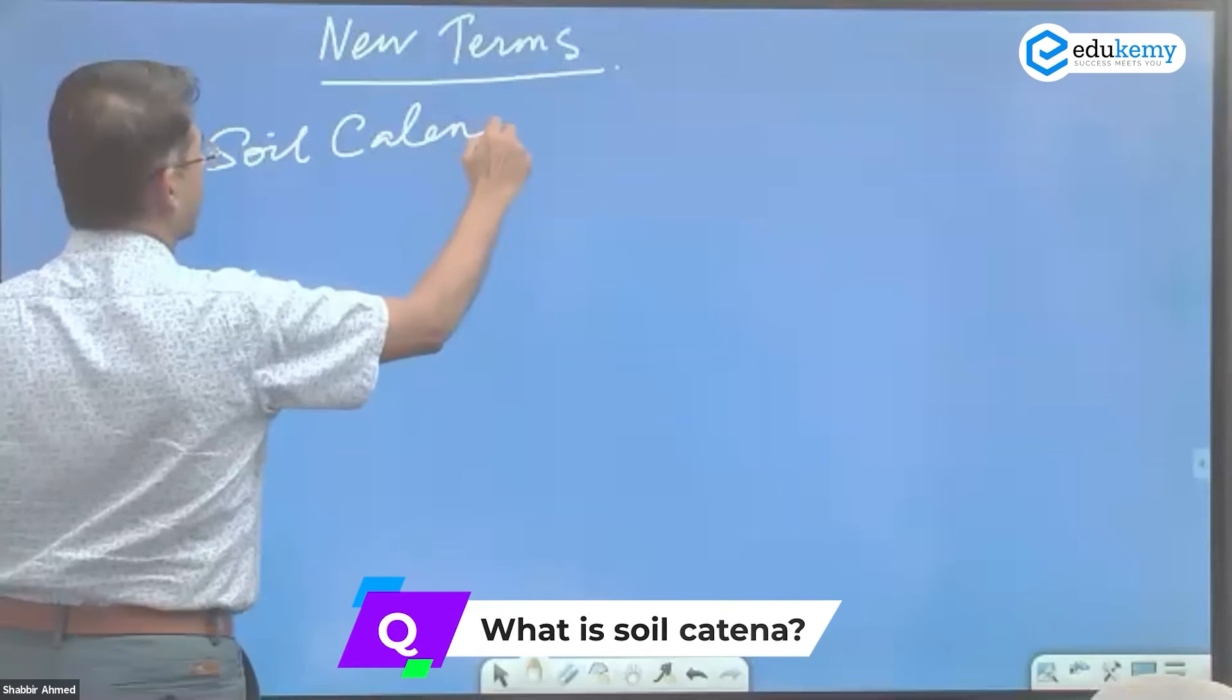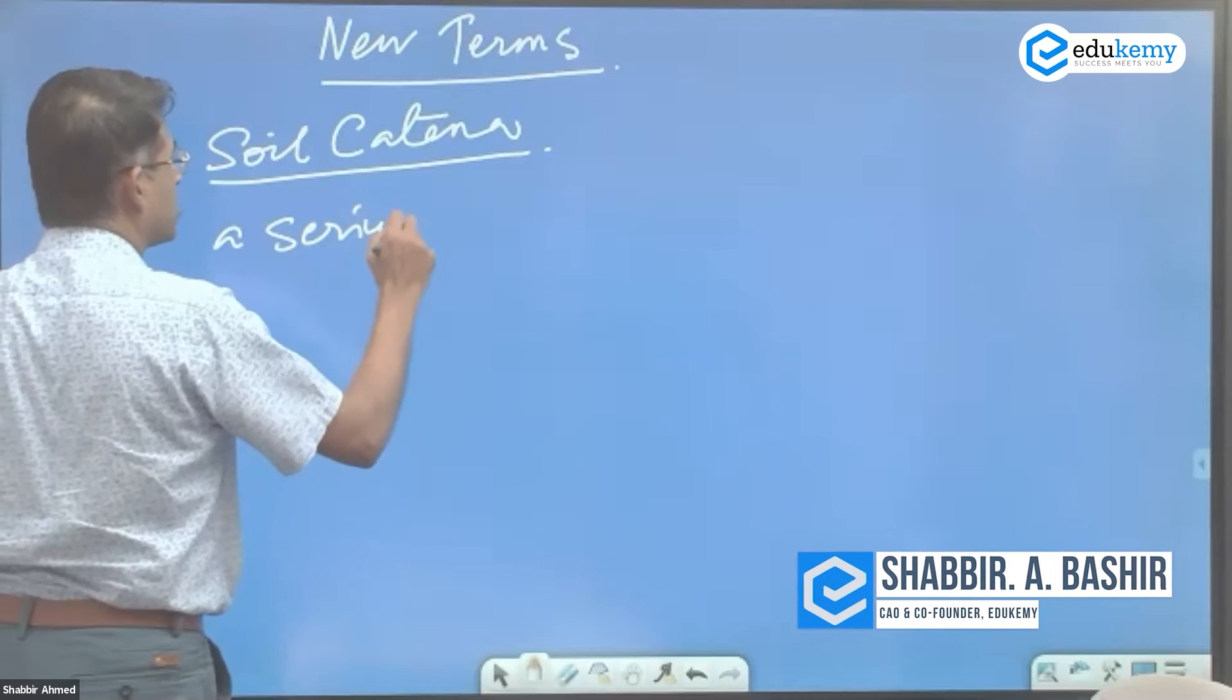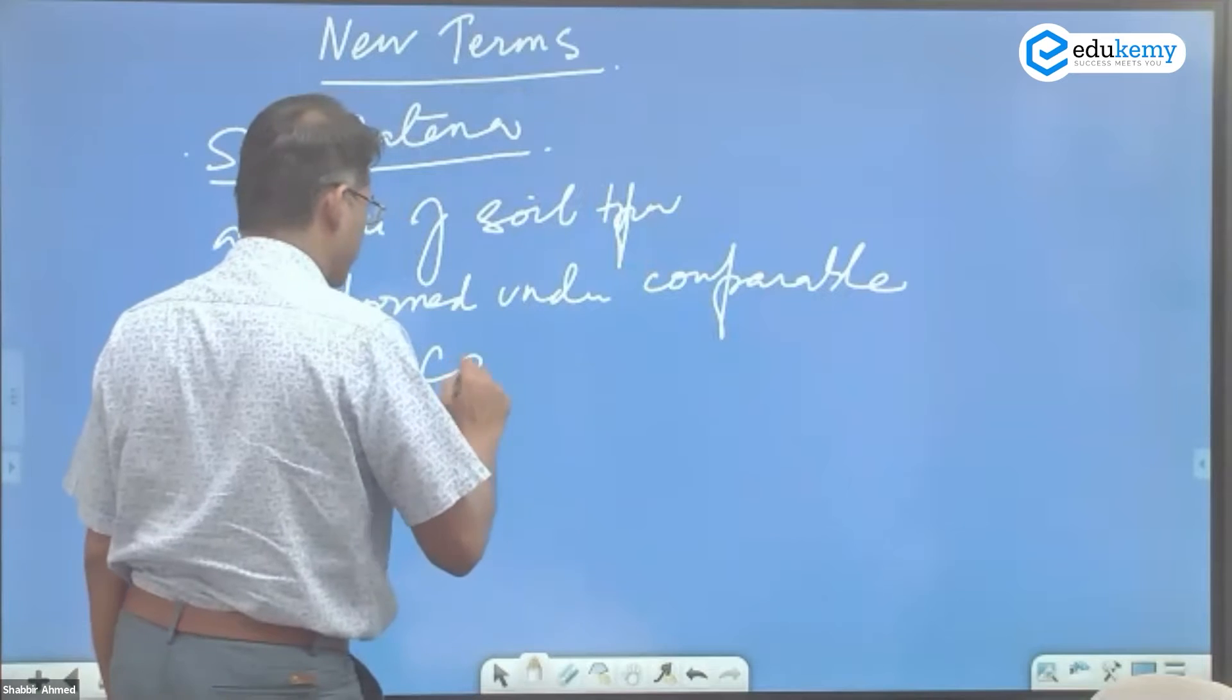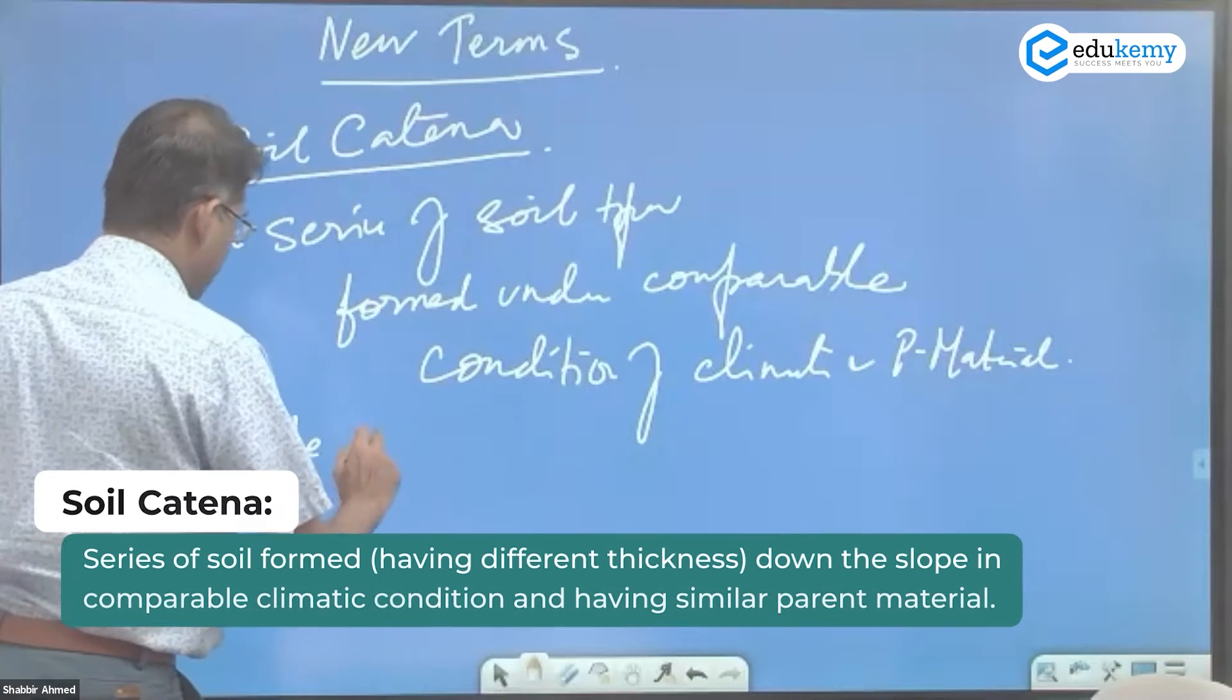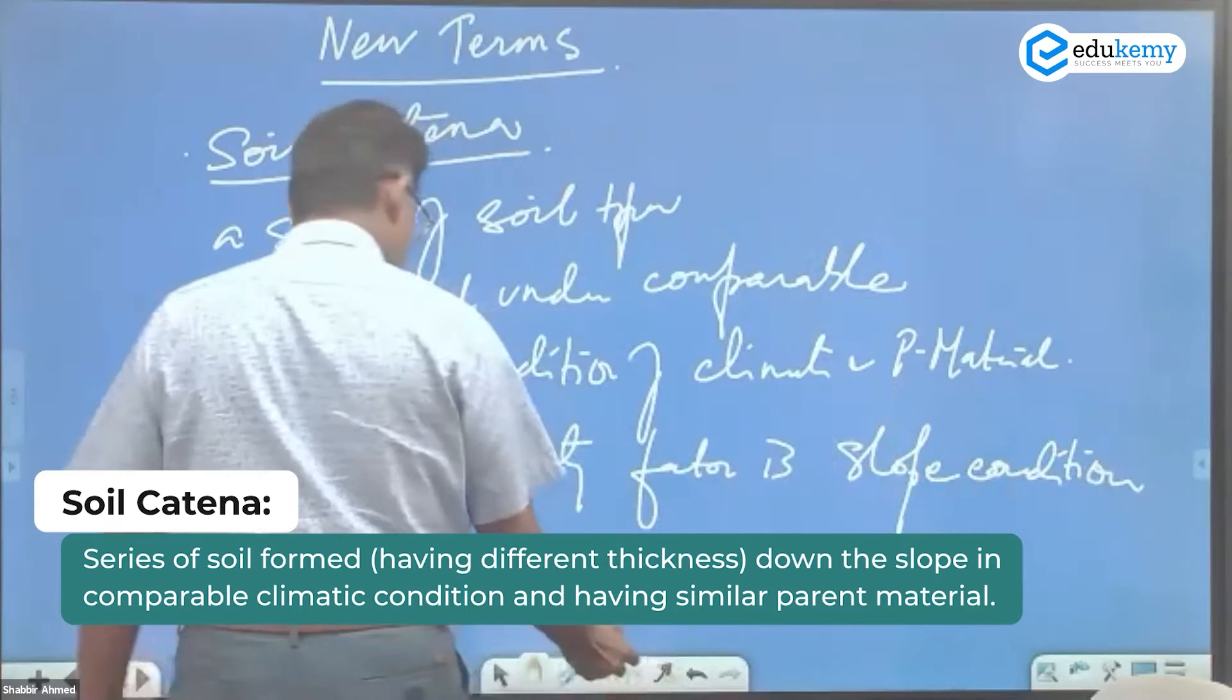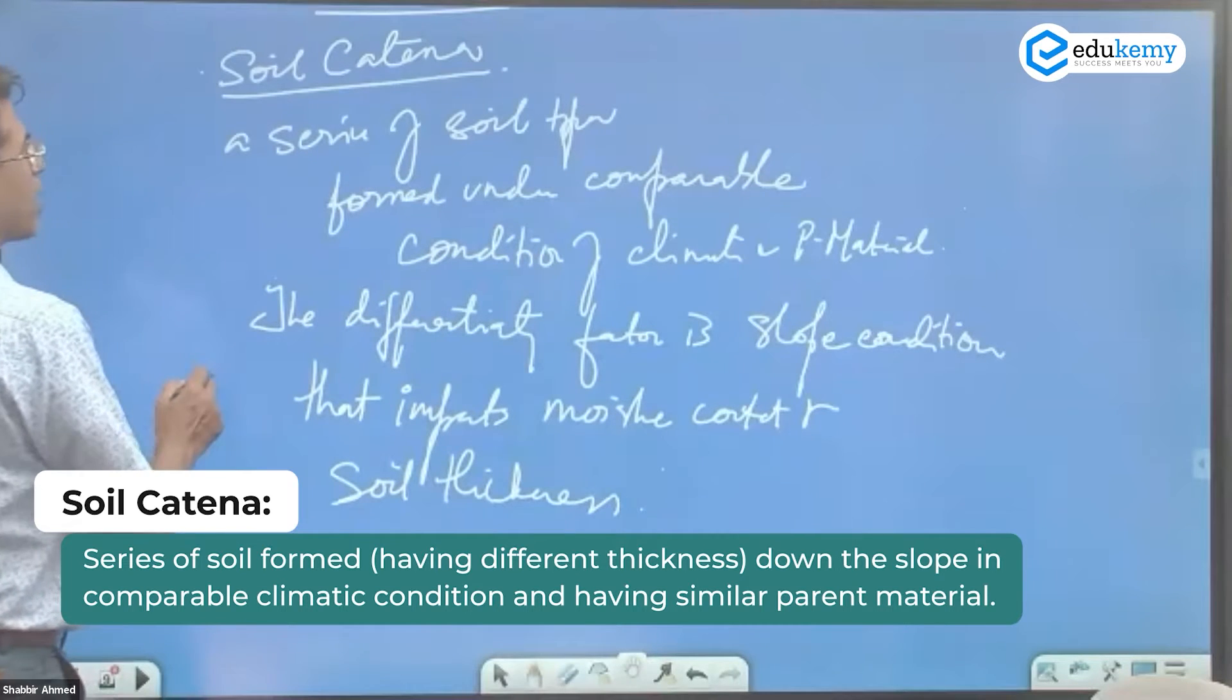Soil catena. What is the concept of soil catena? Soil catena is a series of soil types formed under comparable conditions of climate and parent material. What is soil catena?